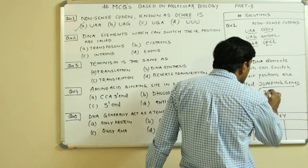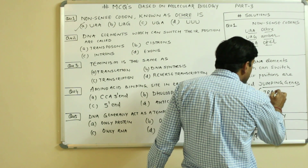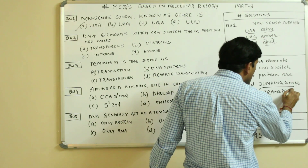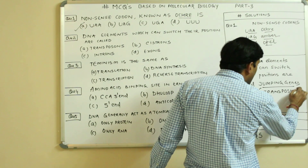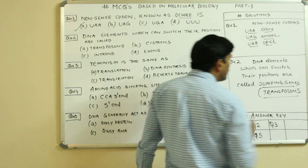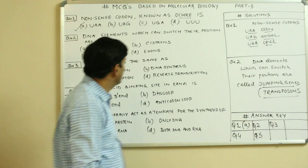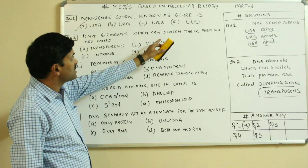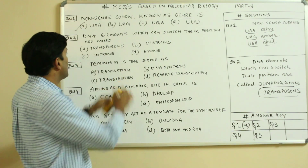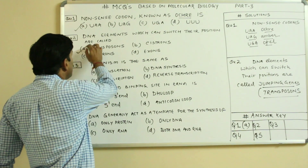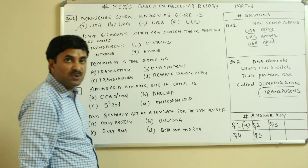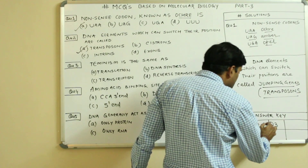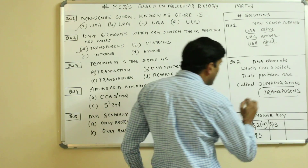They are also called transposons. So DNA elements which can switch their position are called transposons. Question number two is having the answer A.